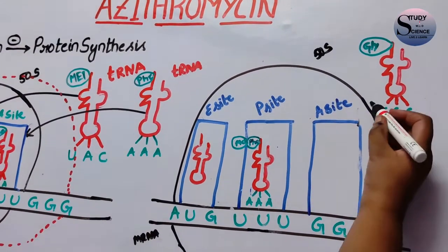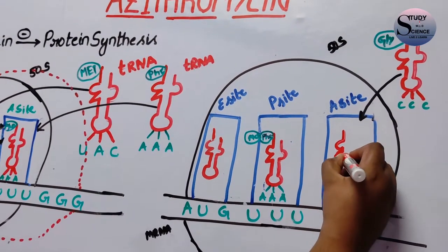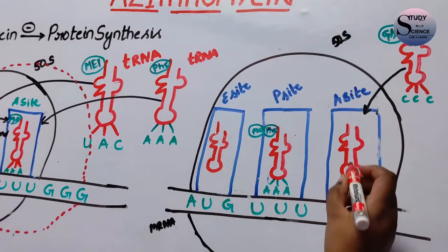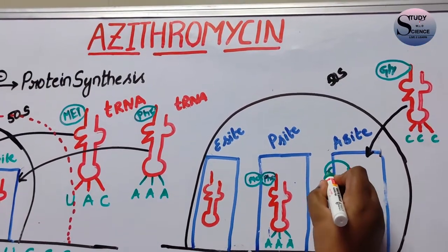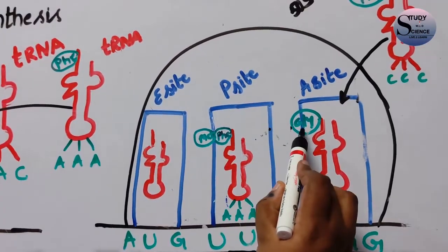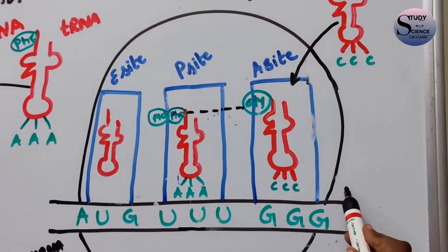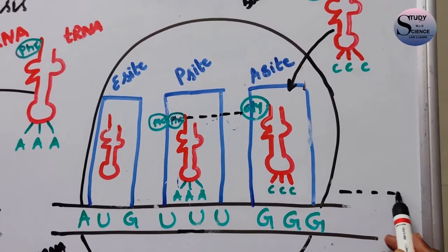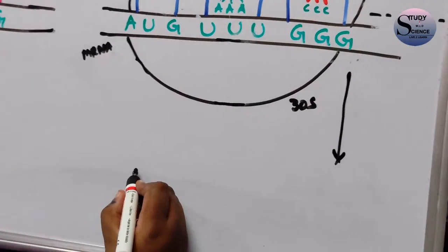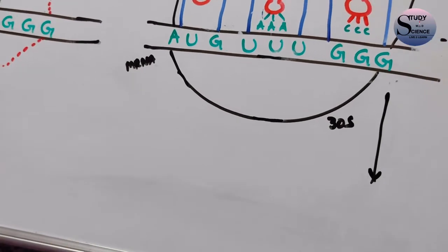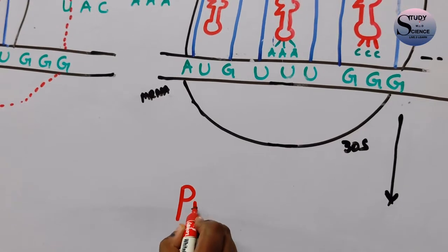This new tRNA enters into the A site and gets bound to the anticodons that code for the specific mRNA, along with the specific amino acid. Again, bonding forms between these two amino acids, and this whole process continues until proteins are formed. All these amino acids continue to form proteins, and like this, protein synthesis happens.